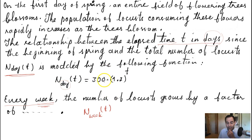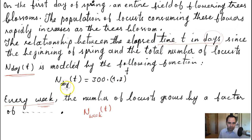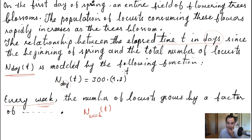This relationship tells us that when the study started, the number of locusts was 300, and then with every day passing by, the number of locusts is increasing by 20 percent — because it's multiplied by 1.2. When you multiply anything by 1.2 you are increasing it by 20 percent. That is the key idea here.